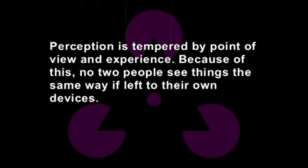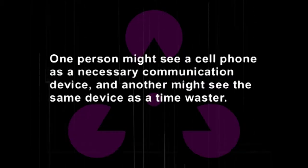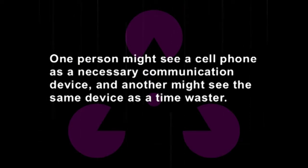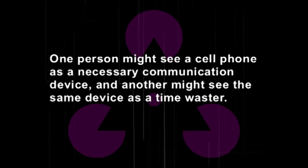Because of this, no two people see things in the same way. For example, one person might see a fancy sports car and another person may see an accident waiting to happen. Similarly, one person may see a mobile phone as a necessary communication device and another might see the same device as a time waster. Our perception is governed by the information we have access to and the way we interpret it. That is why the area of perceptual organization is so important.